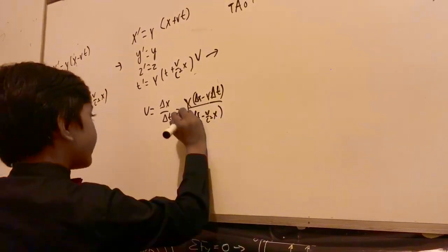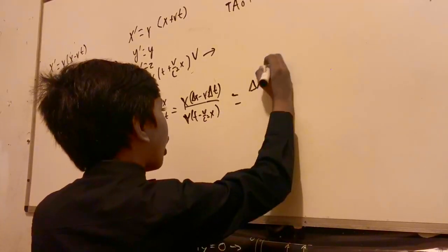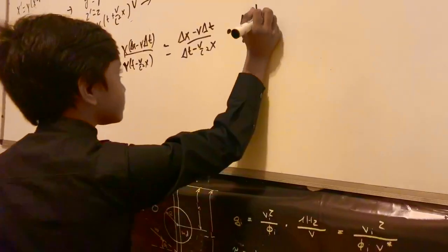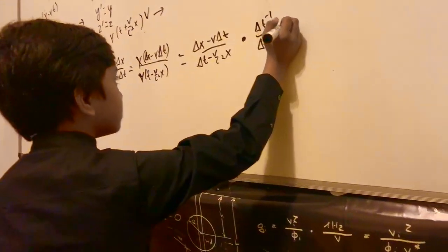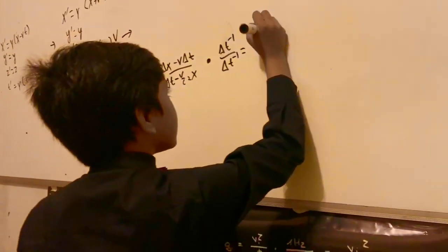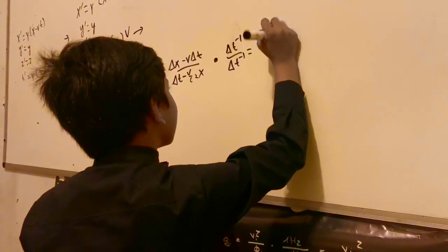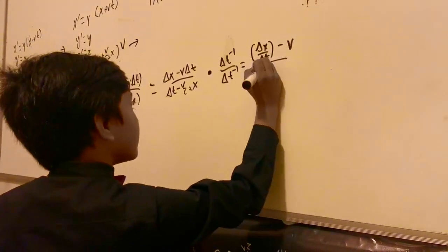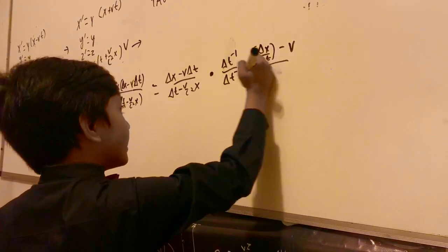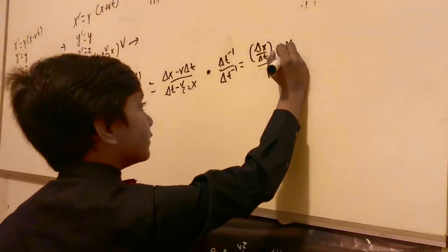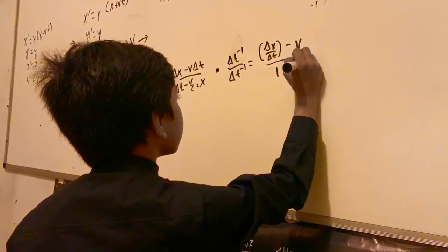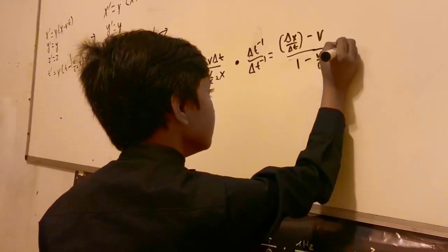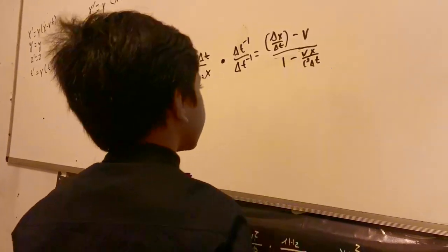So now, when you cancel the gammas, it seems you have a hot burning mess. Now, that gives us delta x over delta t minus v over delta t over delta t is 1 minus v over c squared t, delta t. Oh, and x, Vx over c squared delta t.